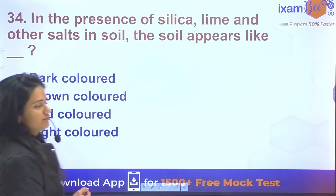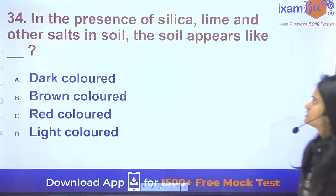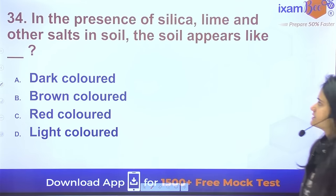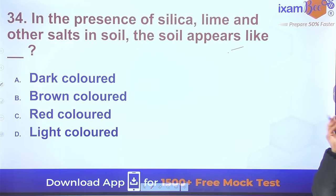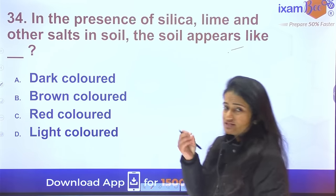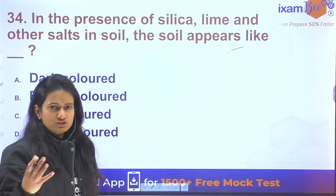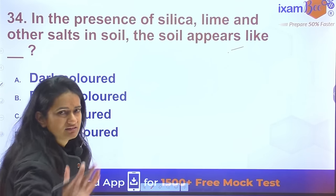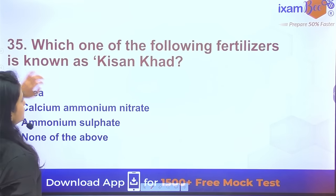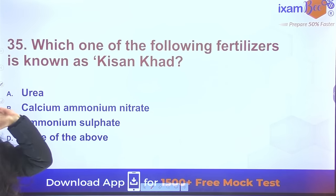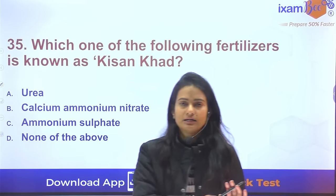Question 34: In the presence of silica, lime, and other salts in soil, the soil appears whitish or light-colored. When organic matter is high, soil appears dark-colored. Saline soils, which contain many salts, appear white or light-colored.